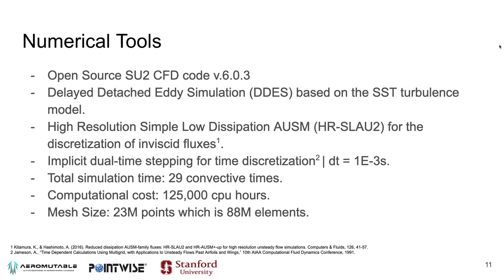To simulate the flow with this mesh, we used SU2 version 6.0.3. For modeling turbulence, we used URANS simulations based on the SST turbulence model. To discretize the inviscid fluxes, we used a high resolution scalar low-dissipation AUSM scheme. For time integration, we used dual time stepping with a time step of 1e-3 seconds. The total simulation ran for 29 convective times, at a computational cost of 125,000 CPU hours, using a mesh of 23 million points — roughly translating to about 88 million elements.